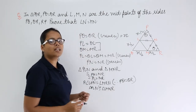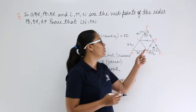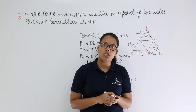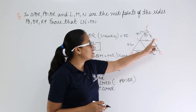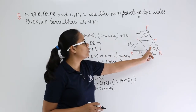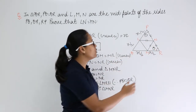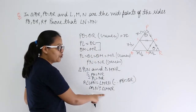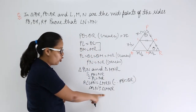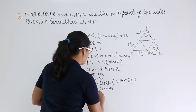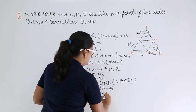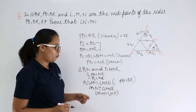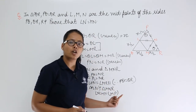When two triangles are congruent, placing one over the other shows they have the same dimensions. You already know PL equals MR and PN equals NR. So their third side, LN and MN, will also become equal. Therefore, LN equals MN — hence proved — because these two triangles are congruent.